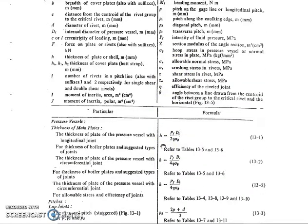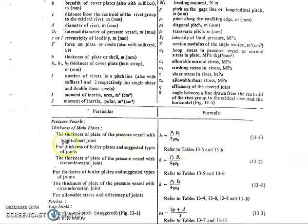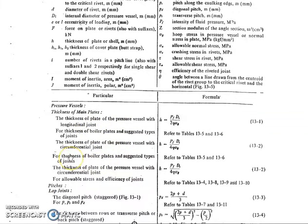For pressure vessels or boilers, there are two kinds of joints: the longitudinal joint and the circumferential joint. The thickness of the main plate for a longitudinal joint is given by equation 13.1: h = pf·di / (2·η·σ_θ) + c. For the circumferential joint, we use equation 13.2 to find the plate thickness.